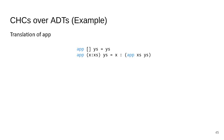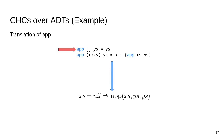Here's an example. Going back to our motivating example, we have the append function and will translate it into a system of CHCs. The first thing we consider is the base case. Its corresponding CHC has the append function turned into a predicate needing three arguments. In the body we have that Xs equals nil, which is the inductive input argument.